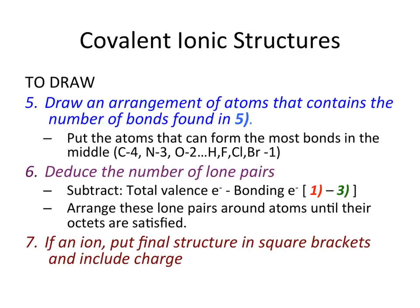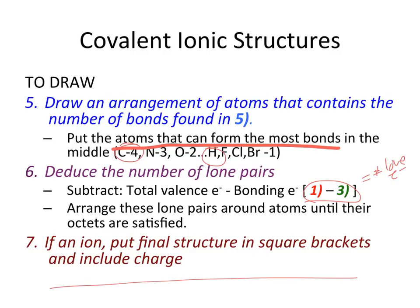Step five is to draw the arrangement of atoms. Place the atom that can form the most bonds in the center — carbon can form four bonds and is usually found there, while hydrogen can only form one bond and is never the center atom. Step six: deduce the number of lone pairs by taking total valence electrons minus bonding electrons. Dividing by two gives lone pairs. If it's an ion, put it in square brackets with the final charge.